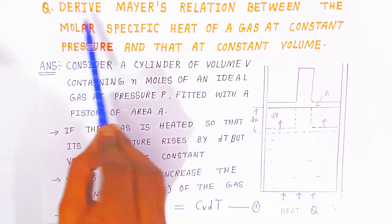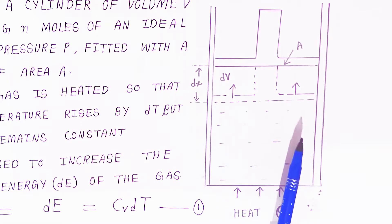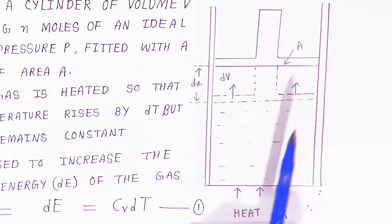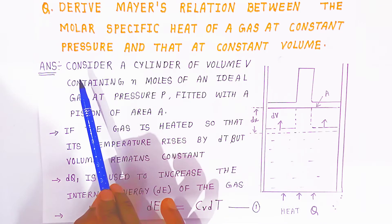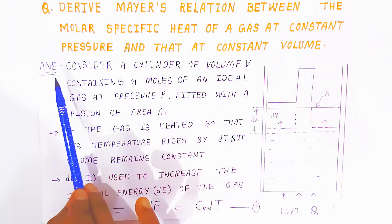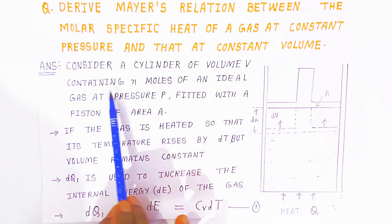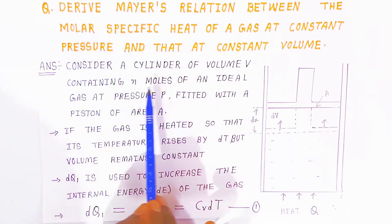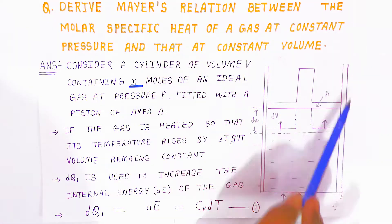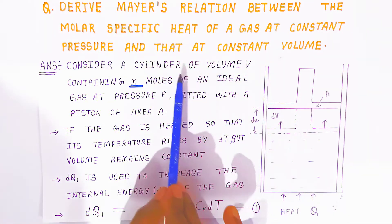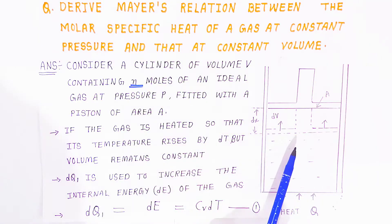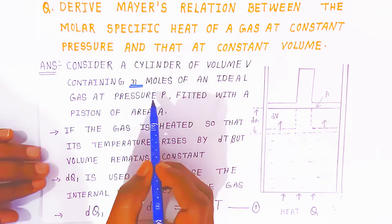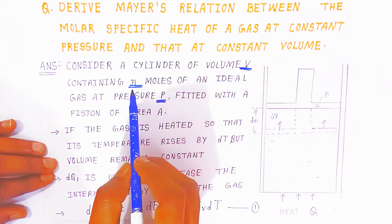To derive Mayer's relation, we draw a cylinder with a piston. Consider a cylinder of volume V containing n moles of ideal gas at pressure P, fitted with a piston of area A. Here V, n, and P are very important quantities.